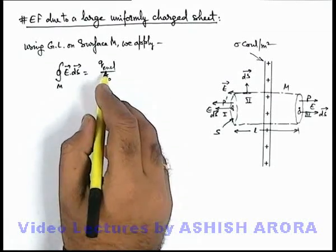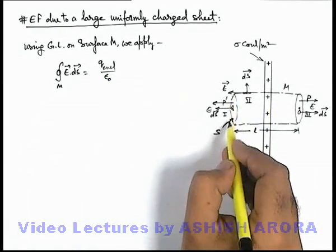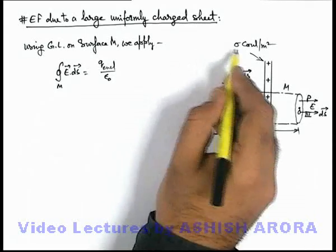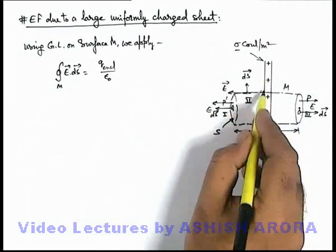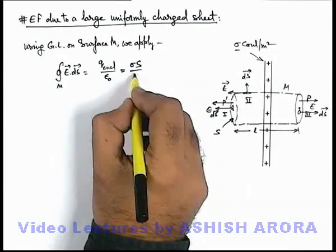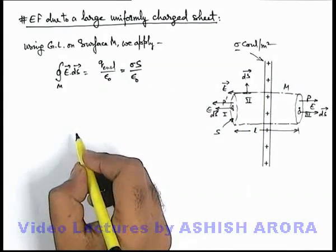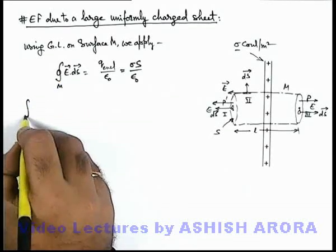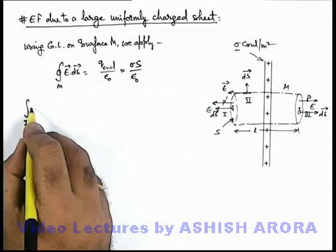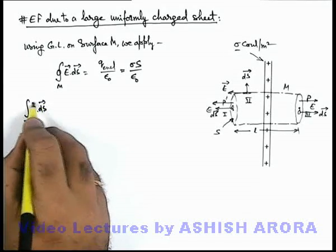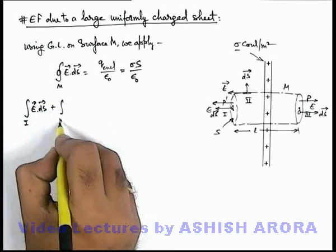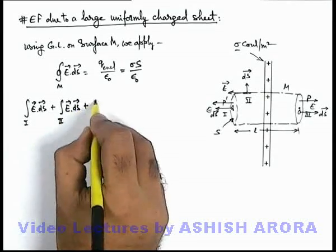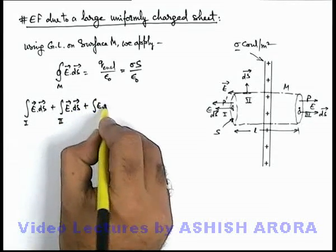Now if we talk about the net enclosed charge, the total area of the surface is S and the surface charge density on the sheet is sigma, so we can say that the total charge enclosed will be sigma S. So this can be written as sigma S by epsilon not. And if we split this integral it can be written as integral of first part E dot dS plus integral for the second part E dot dS plus for the third part.